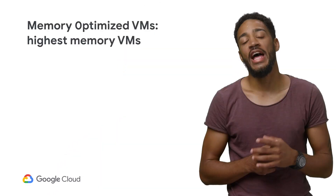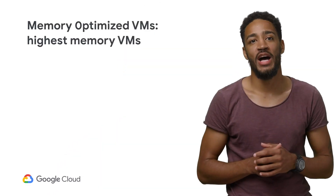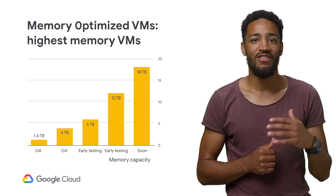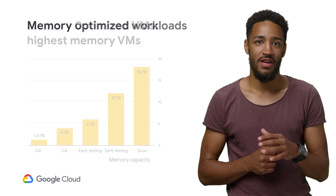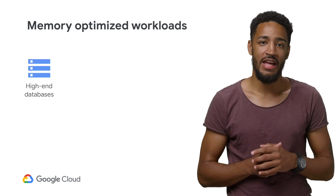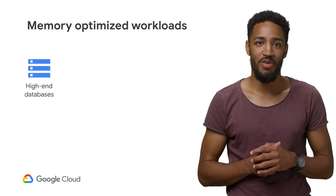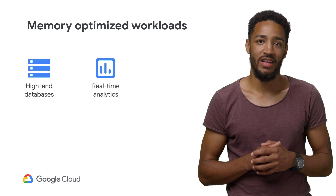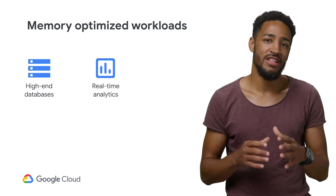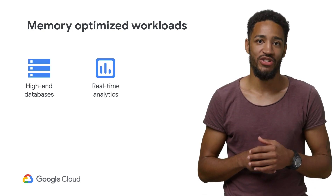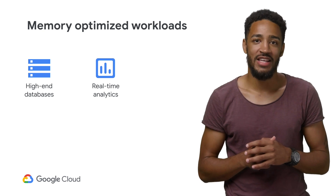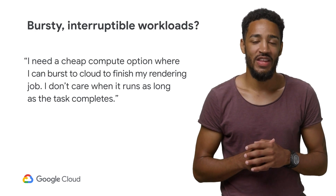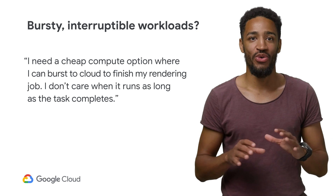What about memory intensive applications that deal with a ton of data? That's where memory optimized VMs come into play. They have a lot of size, from one terabyte to approximately 12 terabytes with more coming. These are a great fit for things like high-end or in-memory databases, real-time and in-memory analytics. They use cutting-edge technology to make it simple for you to persist data, scale up or down your application, and access data at high speeds.